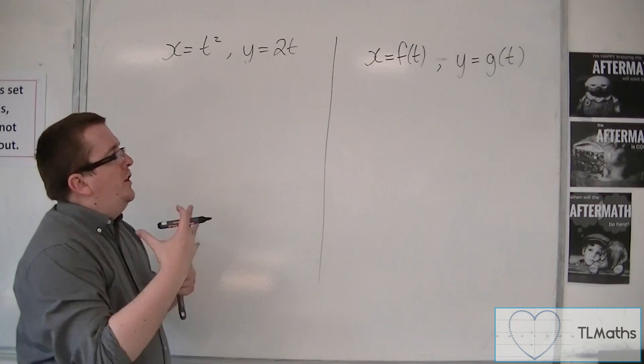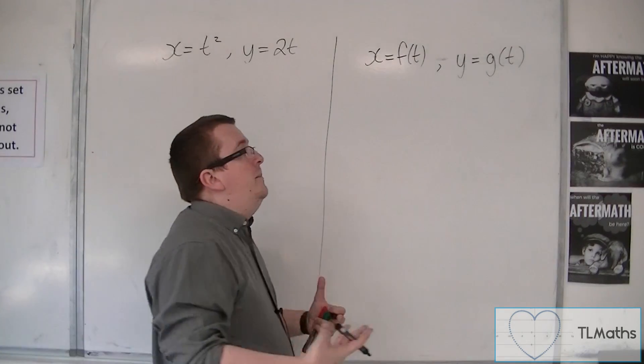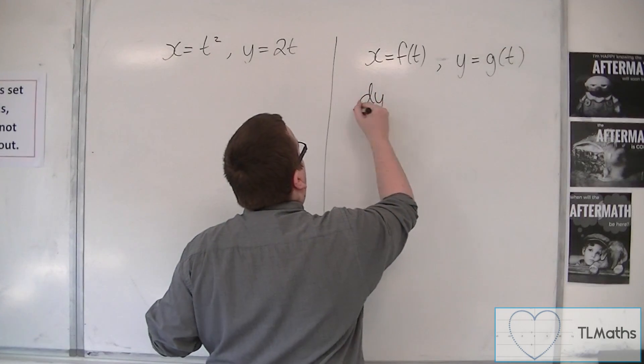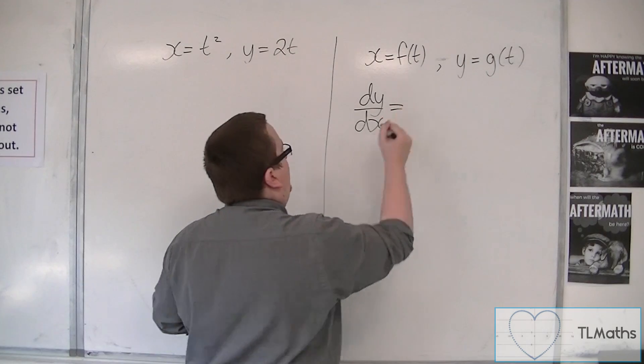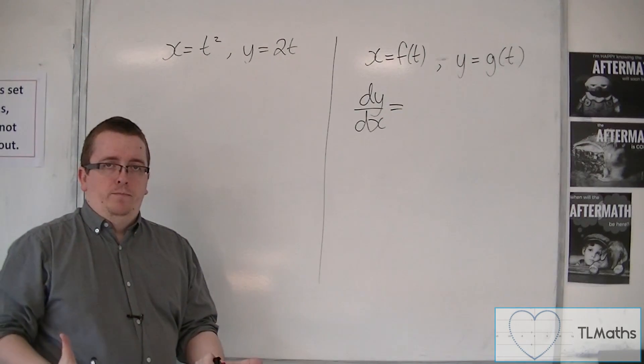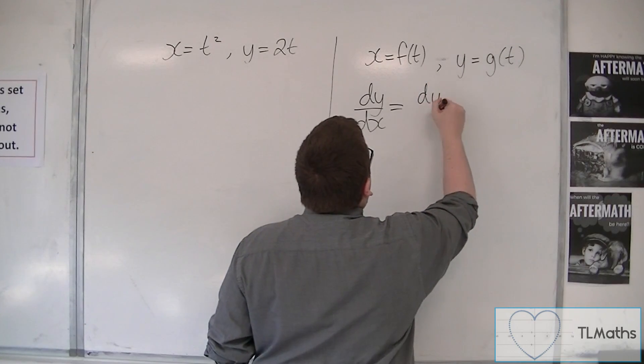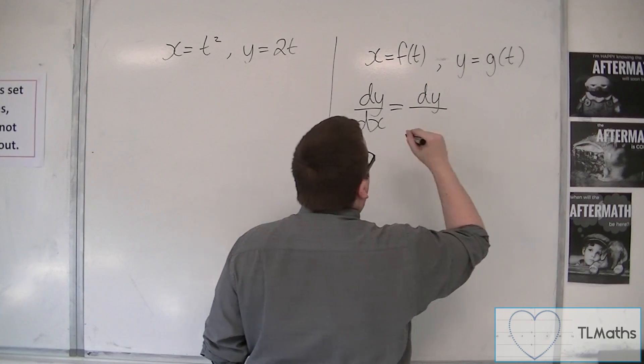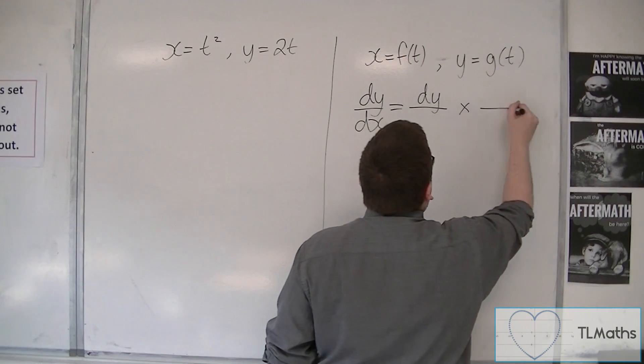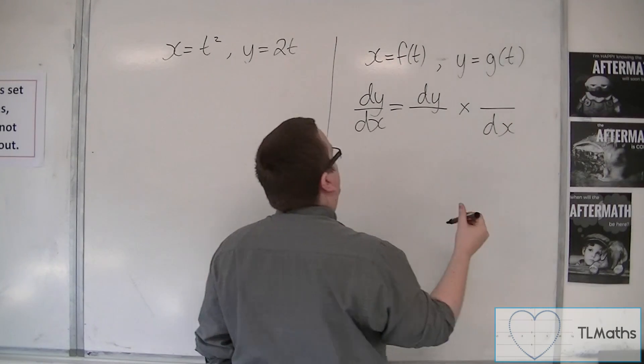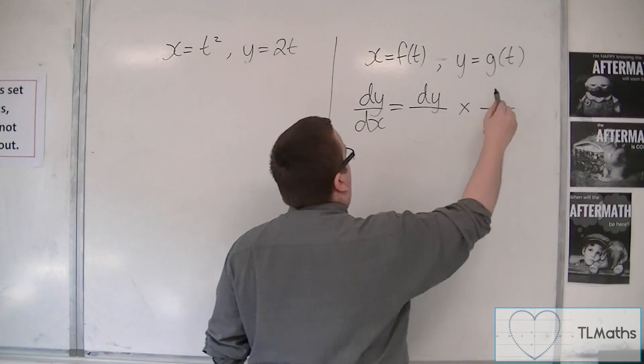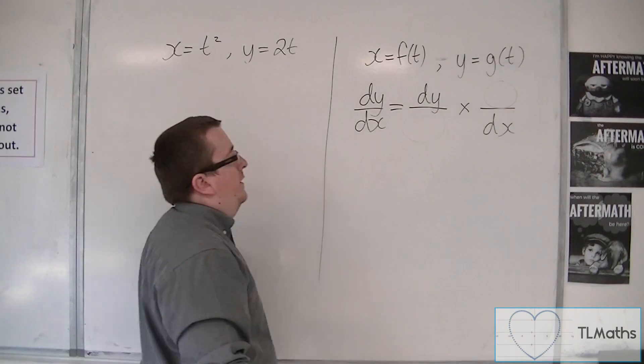then in order to find dy/dx, what we can do is introduce the chain rule. Because the chain rule says that as long as we've got dy there, okay, and we've got dx there, then as long as this bit and this bit are the same...